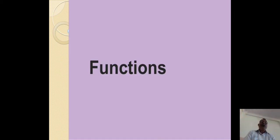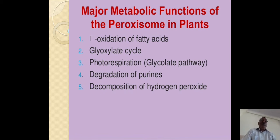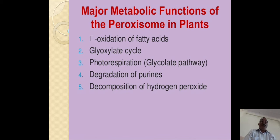Now we come to the functions. Paroxysomes play very important roles in the cell. Major metabolic functions of paroxysomes in plants include oxidation of fatty acids such as beta-oxidation and alpha-oxidation. Similarly, the important glyoxylate cycle is regulated by paroxysomes. One important function is photorespiration, and similarly the glycolate pathway plays a very important role in photosynthesis. Degradation of purines — nitrogenous bases — are broken down by the enzymes present in paroxysomes. Also, hydrogen peroxide formed in cells is broken down by the enzymes present in paroxysomes.